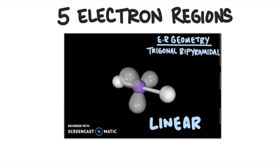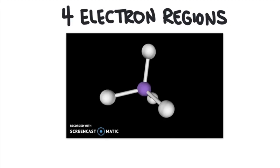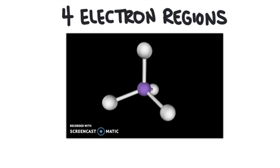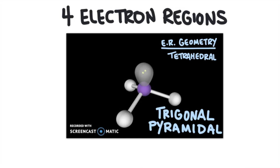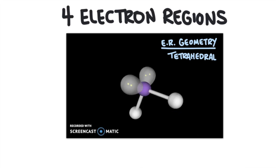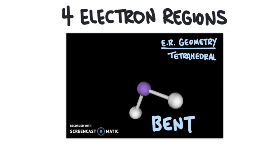Now let's look at different molecules that will have four electron regions. Four bonds and no lone pairs is called tetrahedral. Three bonds and one lone pair will be called trigonal pyramidal. Two bonds and two lone pairs will be bent. Each of these has the same number of electron regions but, once again, different molecular geometries.